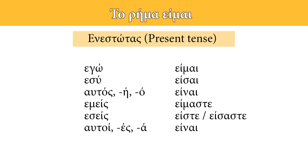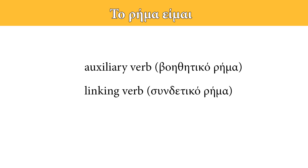The first verb we're going to see is the verb είμαι, meaning 'to be'. In Greek, we don't use the infinitive to refer to a verb, but we use the first person singular of the present tense. So in English it is 'to be', in Greek it is είμαι. It is a very common verb — we use it every day and in many phrases and expressions. It is an auxiliary verb; it helps us form some passive voice tenses that we're going to see in later lessons, of course.